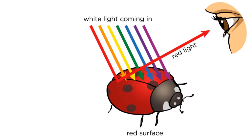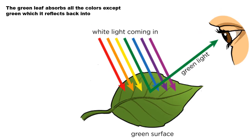White light, which means it's coming from the sun, hits an object. That object absorbs all those colors but one, and that's the one that hits right back at your eye. That's why a ladybug looks red. This green leaf is absorbing every other color but green, and that's what's hitting your eye. That's why the leaf looks green.